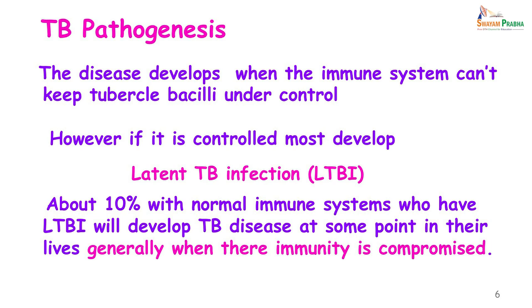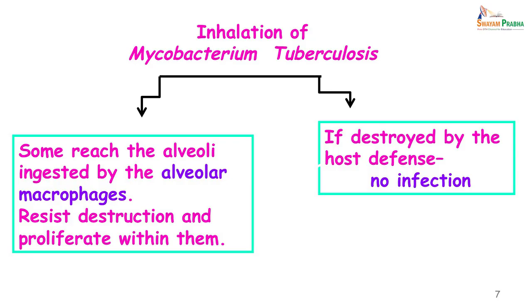About 10% of patients who have LTBI are likely to develop TB later on whenever their immunity is compromised. When we inhale the bacteria, if your body's immune system is very good, the macrophages are going to ingest the bacilli and destroy them. However, very often the ingested mycobacteria tend to multiply within these macrophages. Eventually, the macrophages may die and they may induce a cell-mediated immunity, and a granuloma is formed.